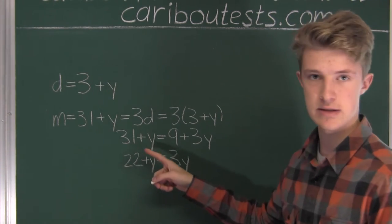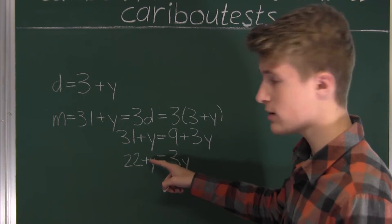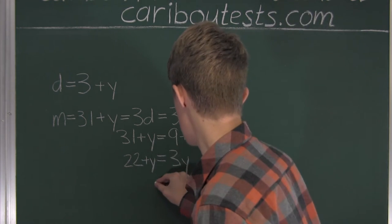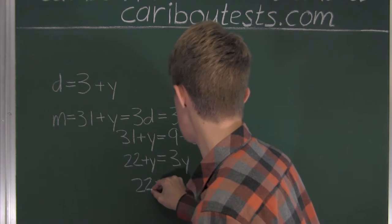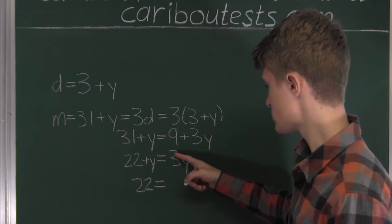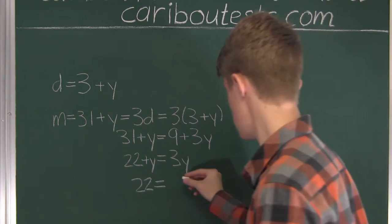Now again, we want just the number here and the Y here. Since we have plus Y here, we want to subtract Y, which will just leave us 22 on this side. If we did that on that side, we must also do it on this side. So 3Y minus 1Y is 2 times Y, or 2Y.